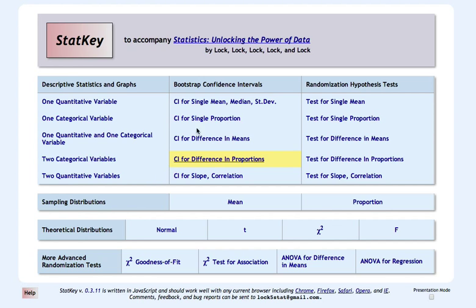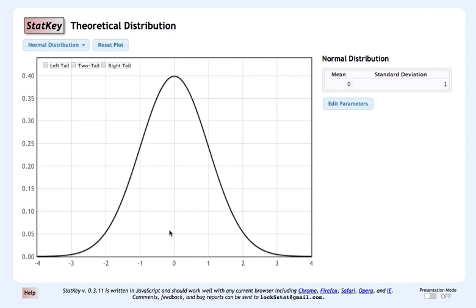So to begin, we'll pull up StatKey, which I already have open on my screen, and we'll go under this Theoretical Distributions area and select the Normal Distribution. Now once we're there, you're going to see that we, by default, have a Standard Normal Distribution.